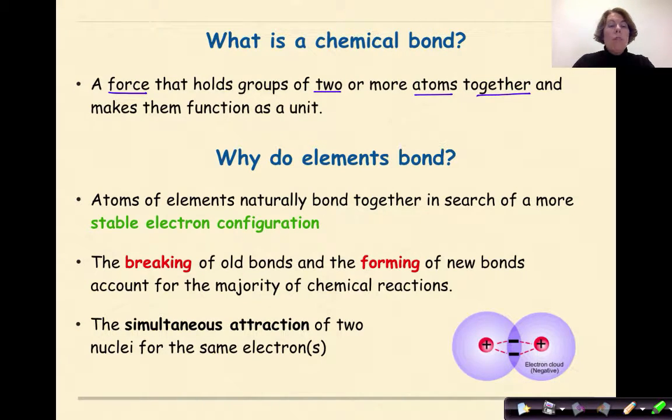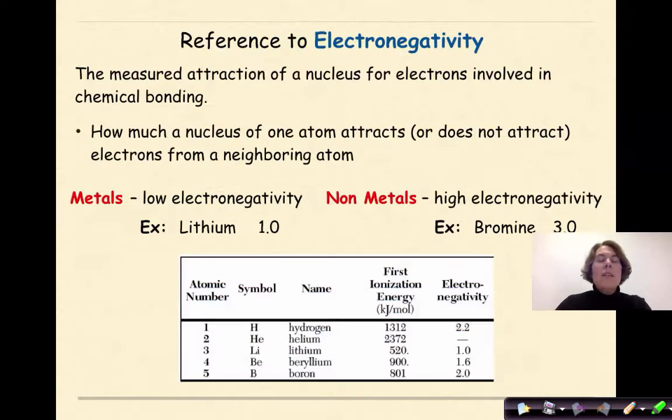The breaking of old bonds and the forming of new bonds accounts for the majority of chemical reactions. Bonding is also the simultaneous attraction of two nuclei for the same electrons. This is a reference to electronegativity, which is found on Table S of your reference table.